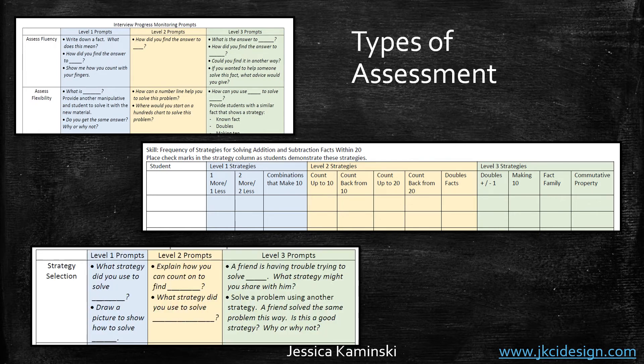Or even journaling — having students journal and explain their process to hit that metacognition piece, using prompts based on their level that push them toward level three. What you're seeing here are some resources available in my developing fact fluency and assessment e-course. It's 1.5 hours, available on my website for only $39, and you get all these templates to use in your classroom. Even if you're not taking the course, think about how you could use these as you're assessing where your students are in their math facts.